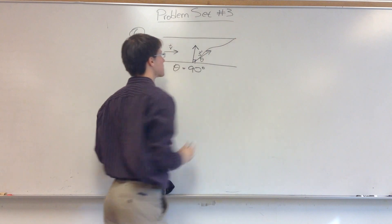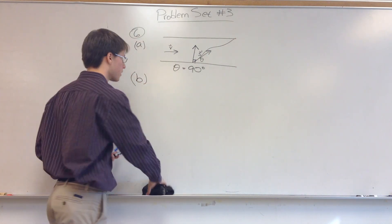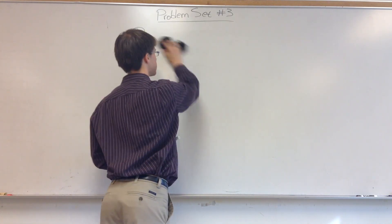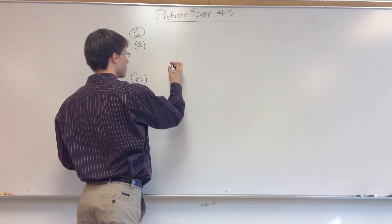but the velocity of the current is going to sweep him downstream, so his actual path will look like that. This time, we want to know what angle should the swimmer swim at such that he ends up going directly across.